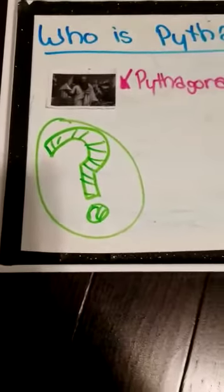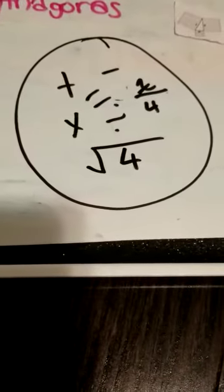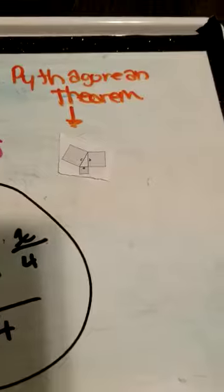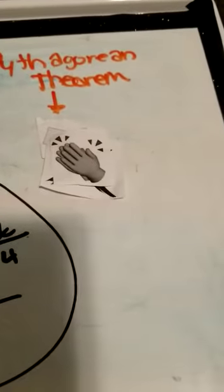But still, who is Pythagoras? Pythagoras is a mathematician, and what he invented or proved was the Pythagorean theorem. Although he didn't really do that. But he still gets the credit for it.